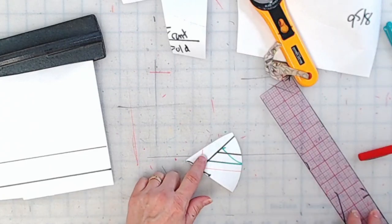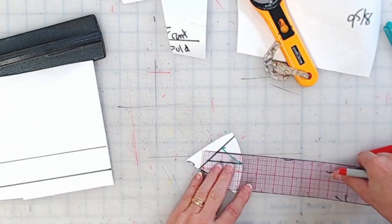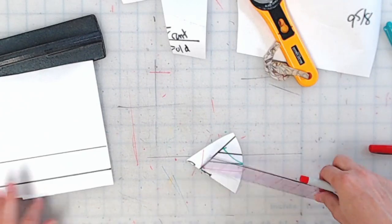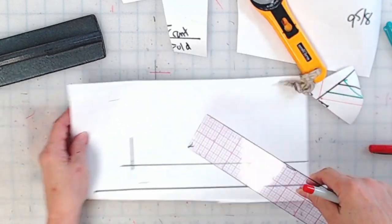And now we're going to measure to that line from our interior black line there. So it's three quarters of an inch for me.